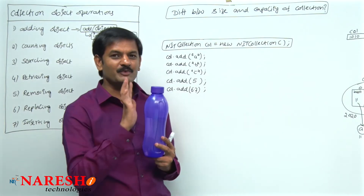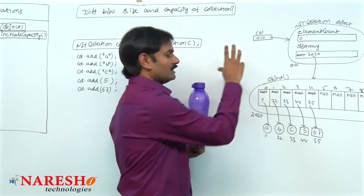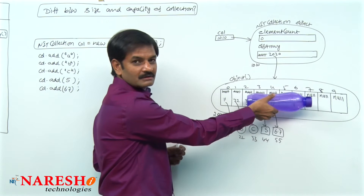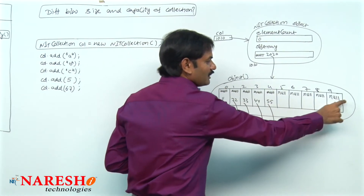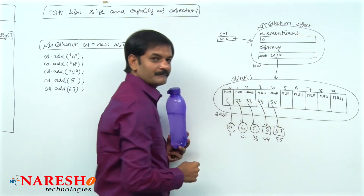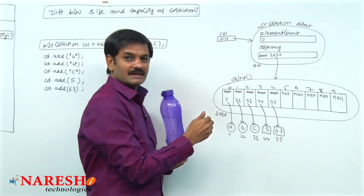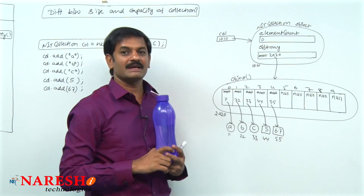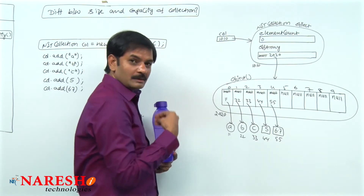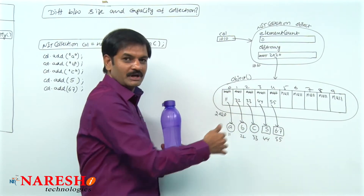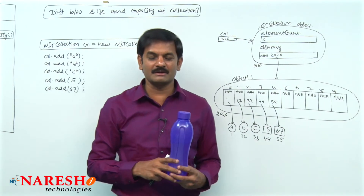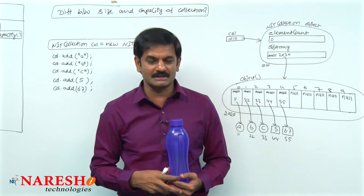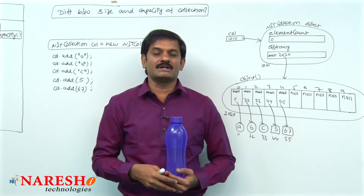The same point is applicable here. We have a collection object, and in the background of this collection object we have an array object — this array object is nothing but the bottle. This array object can hold totally 10 elements; that is the capacity. How many objects can be stored inside this array — the total number — is nothing but capacity. How many objects I have stored at this point is called size. Total number of objects we can store inside a collection is called capacity; how many objects I have stored at this point is called size.